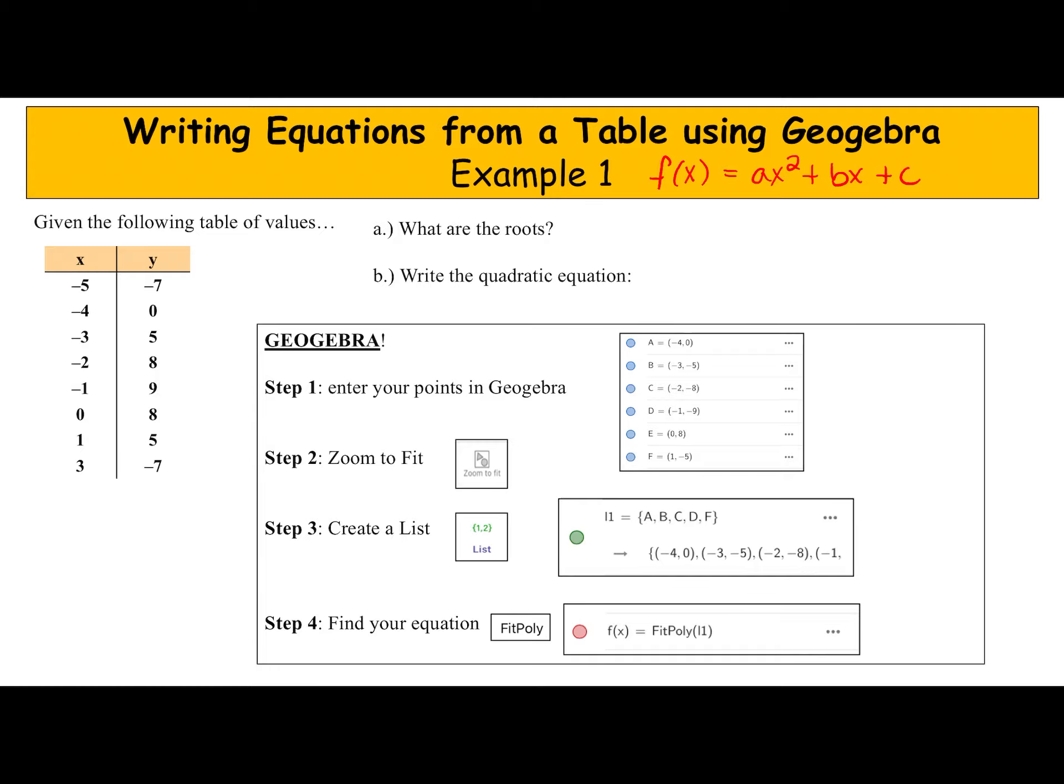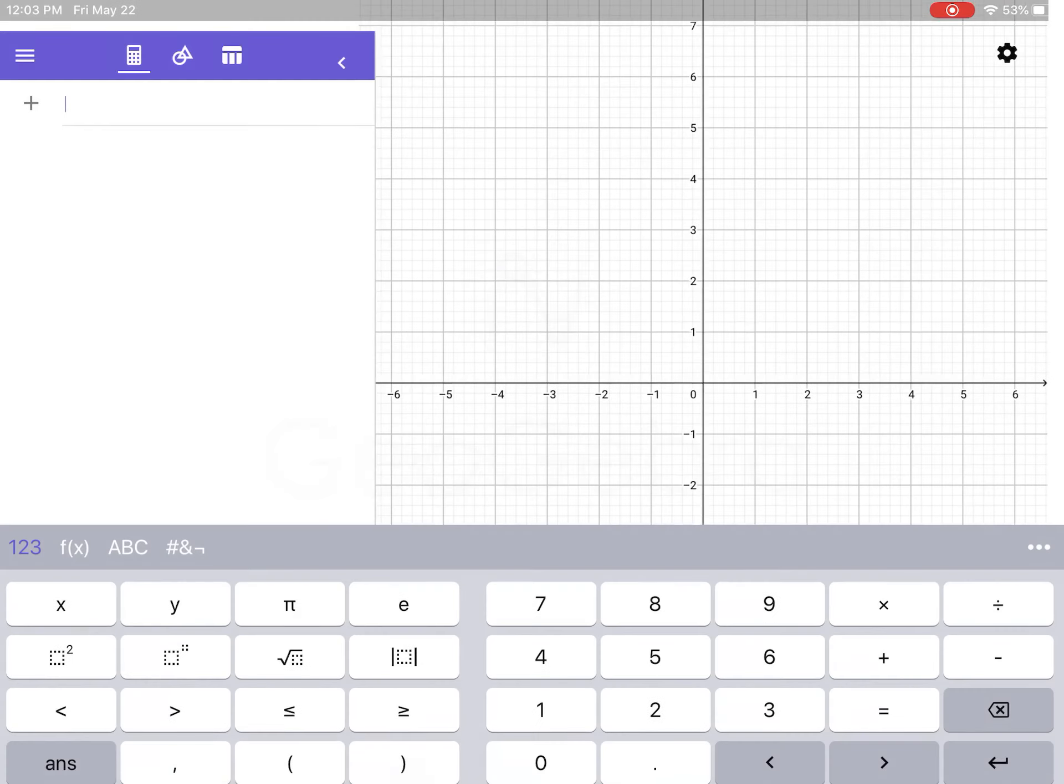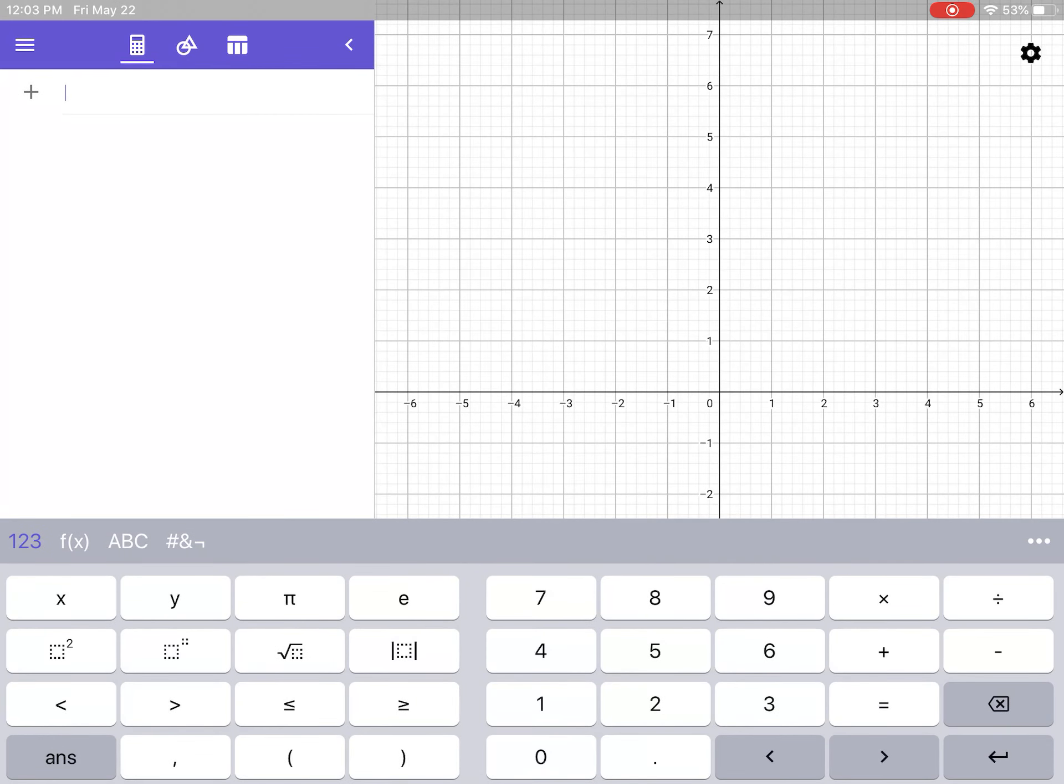Here are the steps for GeoGebra with some picture examples, but I'm going to walk you through an example right now. I'm going to go to GeoGebra and start by typing in my points from my table. In my table, I start with negative 5, negative 7 using parentheses: negative 5 comma negative 7, enter.